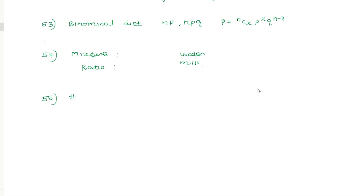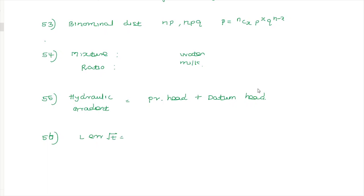The hydraulic gradient equals pressure head plus datum head — that is the answer. The Laplace transform question involves the error function: L{erf(√t)} = (1/s) × (1/√(s+1)), derived using the substitution u² = s, with ∫u² du as part of the proof.